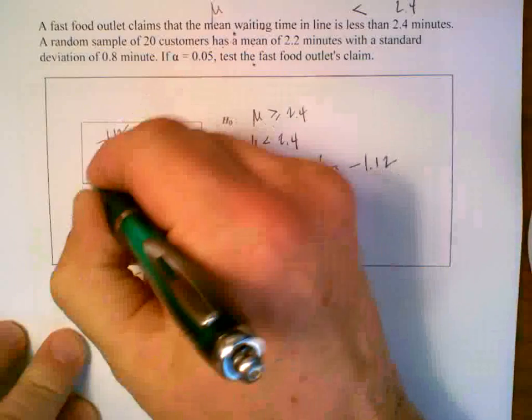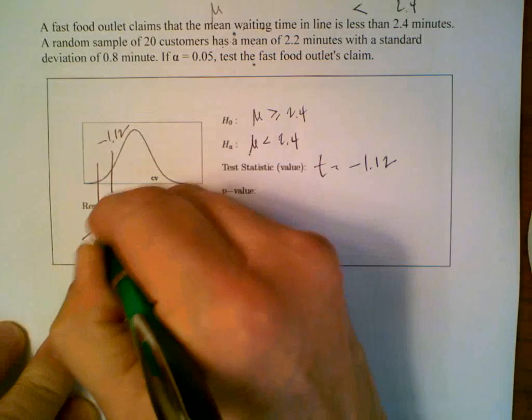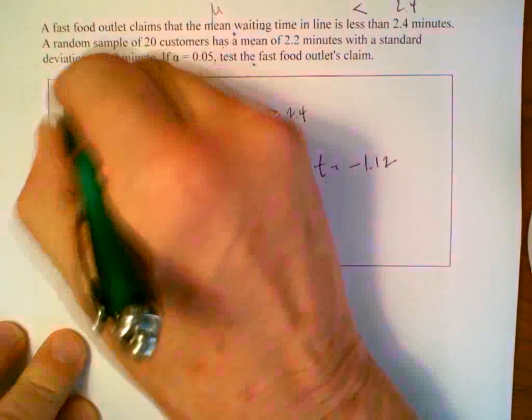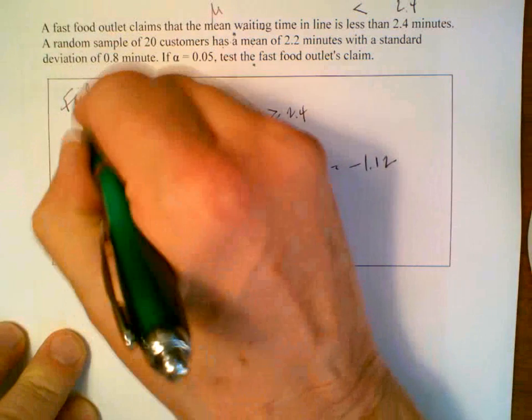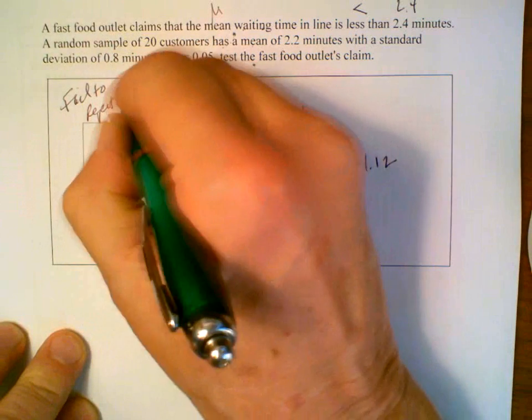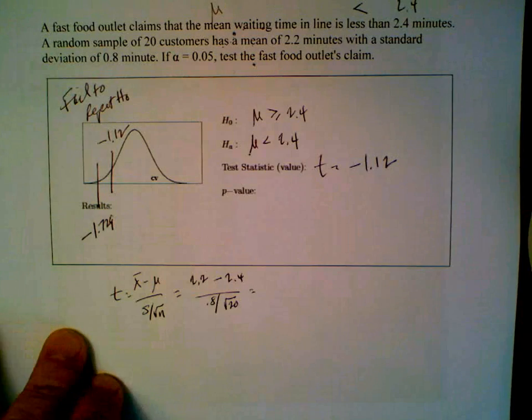Therefore, we're sitting out here, minus 1.729. And we can see that we fail to reject H naught. Failed to reject H naught.